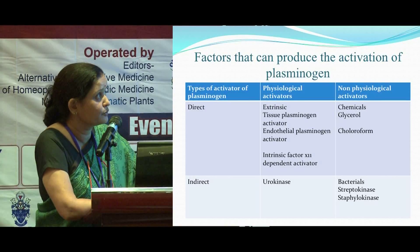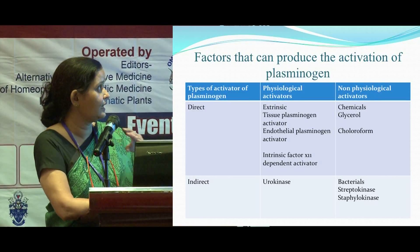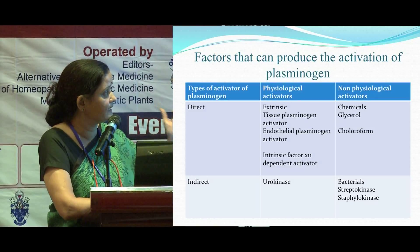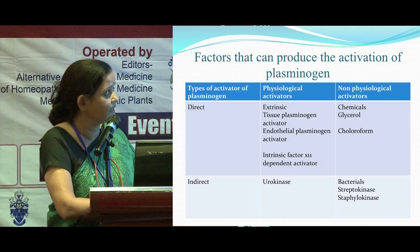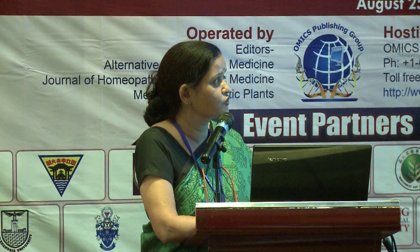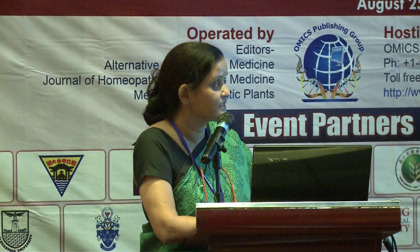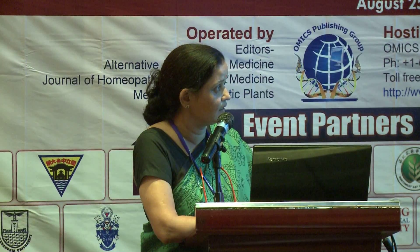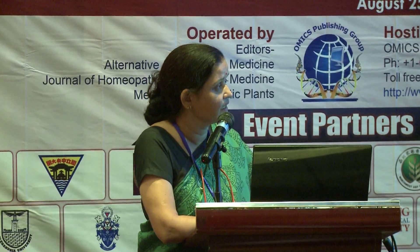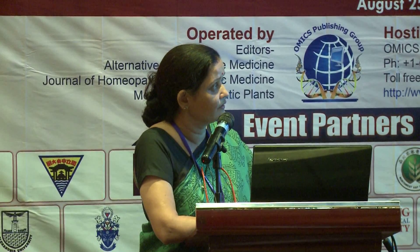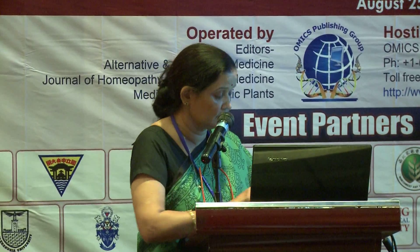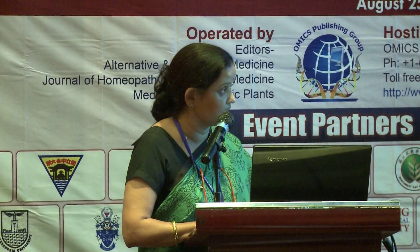Factors that activate plasminogen can be direct or indirect. Physiological activators include extrinsic tissue plasminogen activator, intrinsic Factor Xa-independent activator, and urokinase. Chemical factors include glycerol, chloroform, bacteria, streptokinase, and staphylokinase.